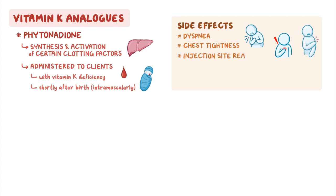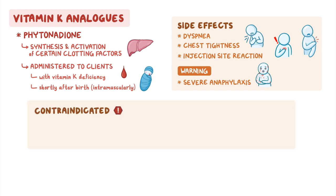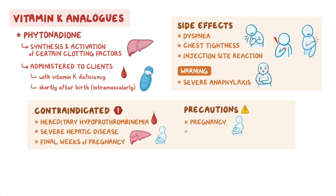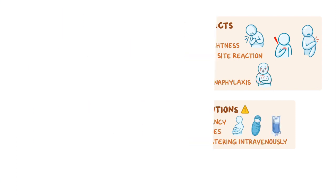Vitamin K analogs can cause side effects like dyspnea, chest tightness, and injection site reactions when given intravenously or intramuscularly. Phytonadione has a boxed warning for severe anaphylaxis that can result in shock. It is contraindicated in clients with hereditary hypoprothrombinemia, as it may cause a hypercoagulable state, and is also contraindicated in clients with severe hepatic disease and during the final weeks of pregnancy. Precautions should be taken during pregnancy, in neonates, and when administering intravenously.